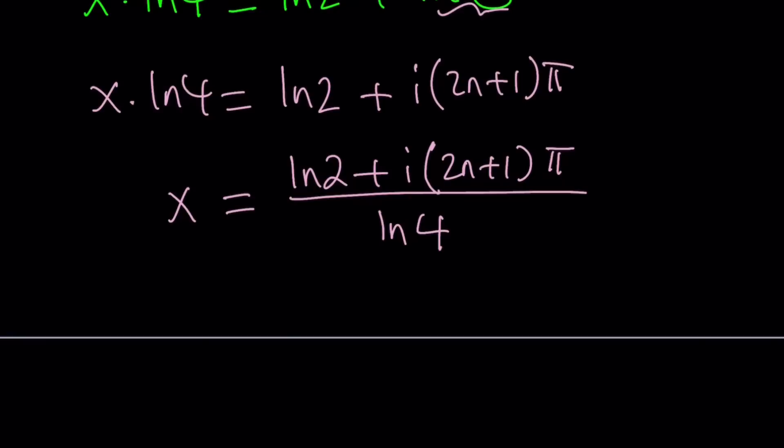Divide by ln 4, and that should give us the answer. Now what is that supposed to mean? Well, if n is equal to 0, you're going to get a solution, ln 2 plus i times pi. And then if you plug it in, you can kind of check that this is going to work.